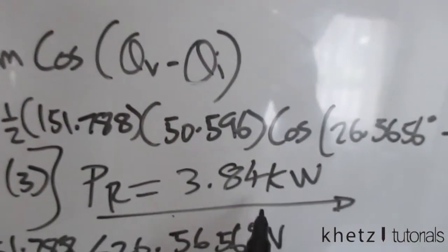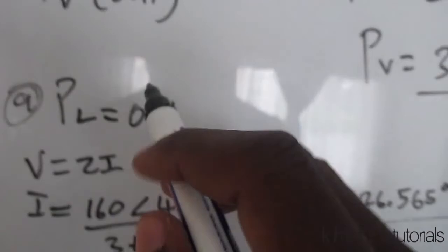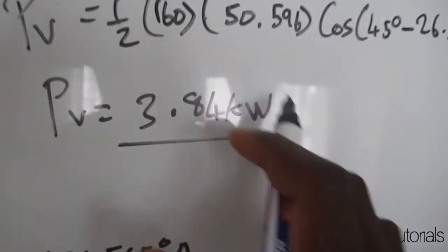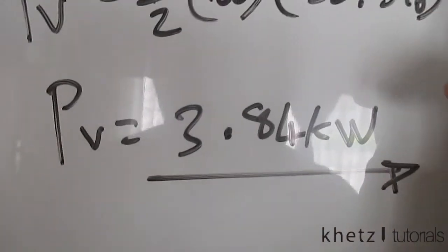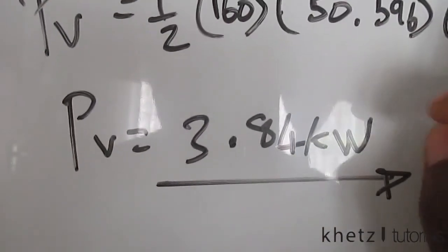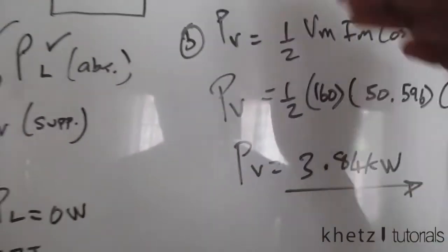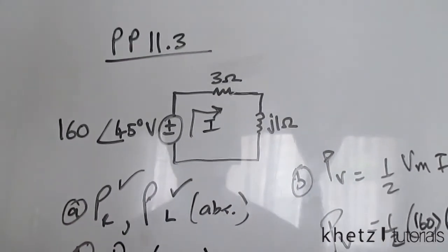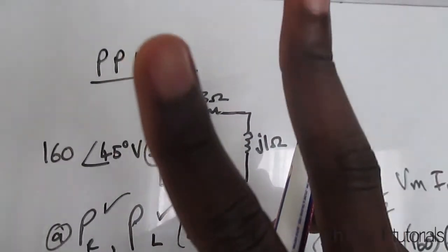The power supplied and the power absorbed by the resistor are equal at 3.84 kilowatts, which confirms that the inductor absorbs zero power. All power supplied goes directly to the resistor. That is how you solve this problem — give the video a thumbs up and subscribe if you haven't already.